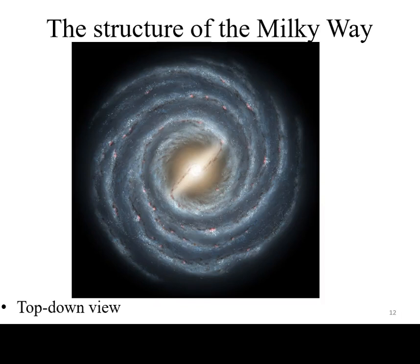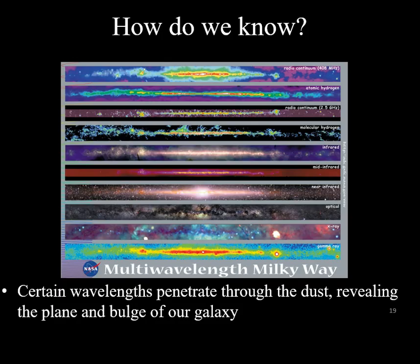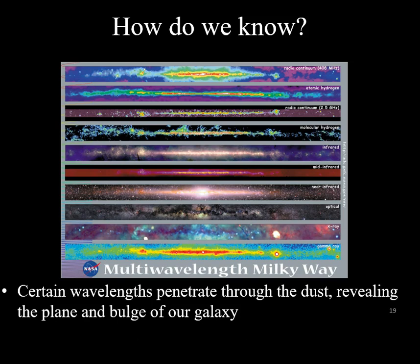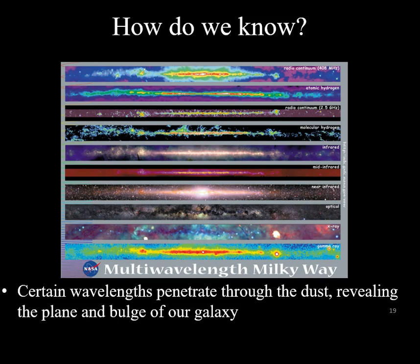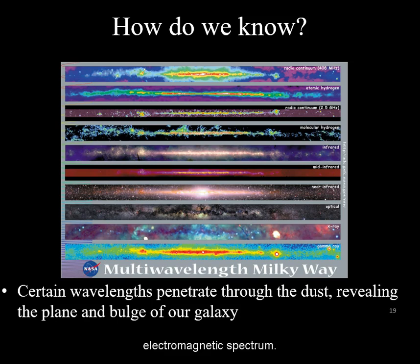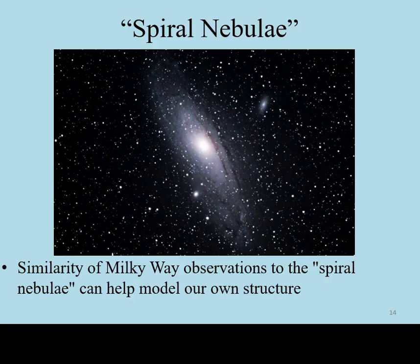This is a summary of the structure of the Milky Way. While we have never traveled outside our own galaxy to take a look at it, we have clues from observations at multiple wavelengths of the electromagnetic spectrum. We can also compare with other known spiral galaxies.